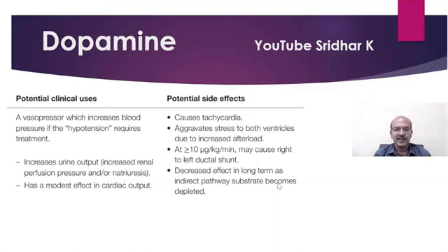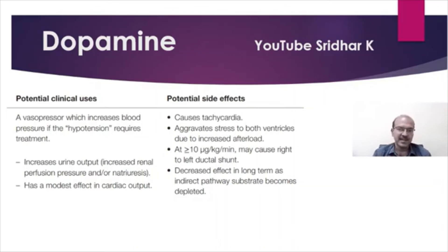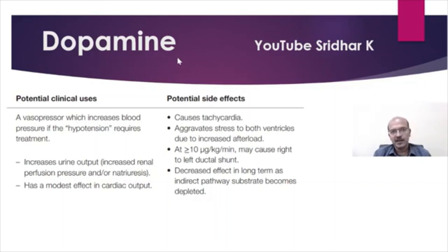Dopamine has a decreased effect with long-term use because of its indirect pathway mechanism. One indirect mechanism is the release of norepinephrine, and if norepinephrine in the cardiac muscle becomes depleted, it no longer functions effectively. The key message: very low doses may not be truly useful, very high doses can be harmful, and dopamine should be avoided in any situation with raised pulmonary vascular resistance.